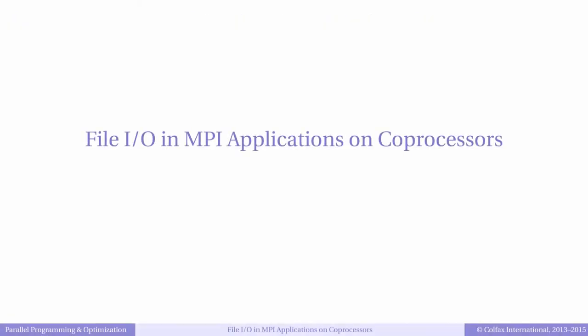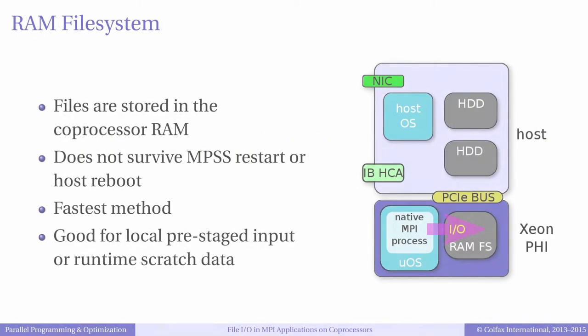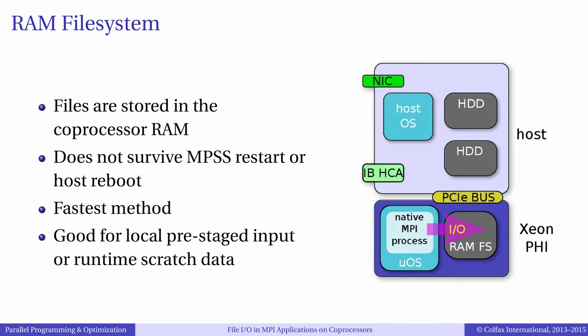Most real-world MPI applications, in addition to sending and receiving messages, may also read and write data stored in files. How does that work when an MPI process is running on the Intel Xeon Phi coprocessor? There are three ways to work with files on coprocessors. The first method, shown here, is configured by default. MPSS configures a RAM disk on Intel Xeon Phi coprocessors which lives in the memory of the coprocessor, and this RAM disk hosts the operating system and may also host the files of users.